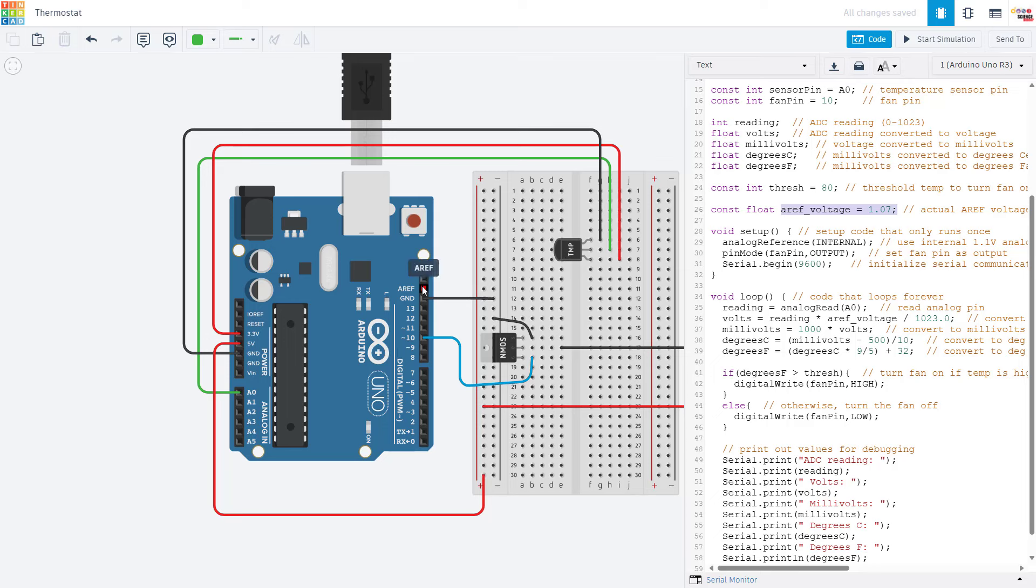The Arduino has an internal analog reference voltage of nominally 1.1 volts that is more stable than the 5 volt supply, which can fluctuate when you're doing other things like driving fans or LEDs. That is going to help us get more stable temperature readings. In addition to having a variable for that, we also use the command analog reference internal in our setup function to tell the Arduino that we're going to use that internal analog reference. We also set the fan pin as an output and initialize serial communication so we can print out our temperature values.